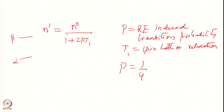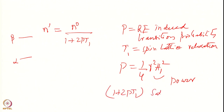P is equal to one-quarter gamma-squared H1-squared, where H1 is the amplitude of the RF and gamma is the gyromagnetic ratio. H1-squared defines the power of the RF — the more the power, the higher the transition probability and you tend to reach saturation. The term 1 plus 2PT1 is called the saturation factor: if it is very large, N-dash may go down to zero and you lose the signal. That is why this is called the saturation factor.